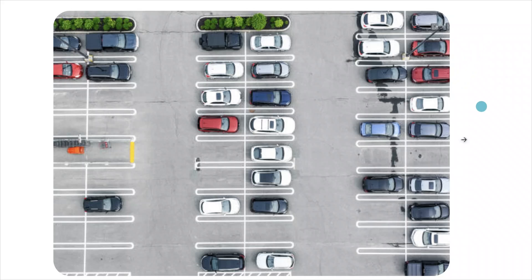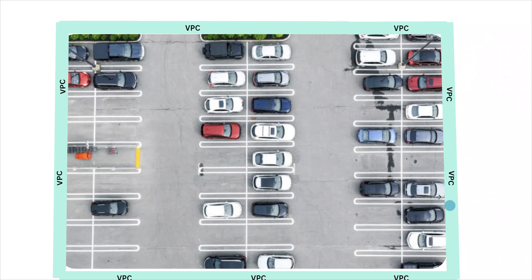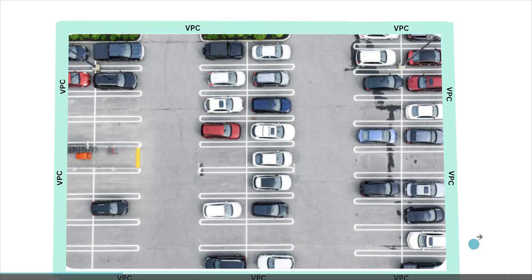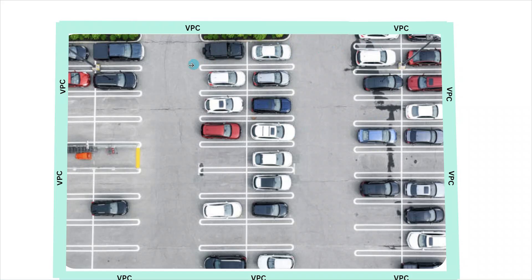Now let's assume that you decide to put a fence around this parking lot — this fence will become your VPC. Once you put a fence around this parking lot, the resources or vehicles inside this parking lot will not be able to go in and out without your permission. Imagine that these vehicles are the AWS resources that you have in your VPC.